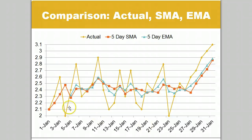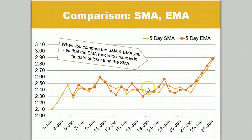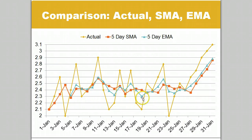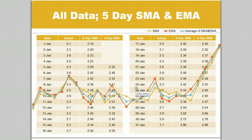If we compare the SMA and the EMA for the same five-day period, we see that the EMA reacts more quickly to changes in data, reducing the lag that SMA presents. When we compare the actual data with the five-day SMA and EMA, we easily see that the EMA more closely represents the actual data and responds to changes quicker than the SMA. However, neither of these moving averages is perfect, so many analysts use a combination or an average of both to forecast. This is represented by the blue line with triangles on this graph.